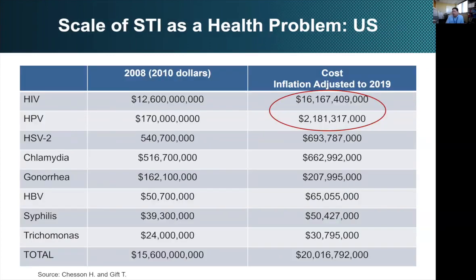These data come from the United States. The last time the CDC made an effort to estimate the economic impact of HIV and STIs in the United States was 2008 — these are numbers adjusted to 2019 dollars. You can see the dominance of HIV and HPV, although many STIs contribute substantially to morbidity. We're talking about over $20 billion a year in economic impact in the United States. The scale of the problem is really dramatic.